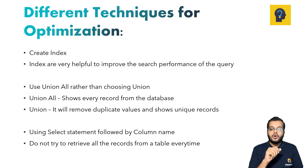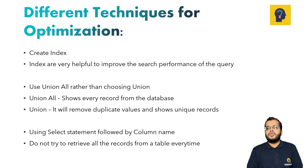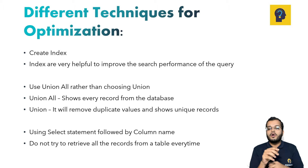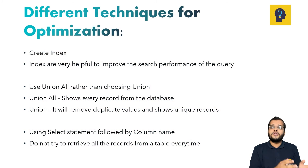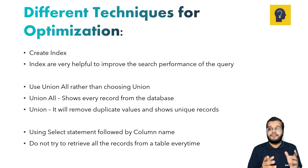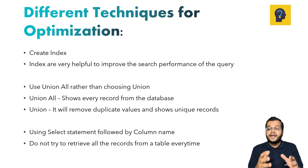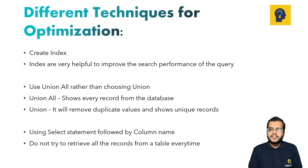The second technique is to use UNION ALL rather than UNION. UNION ALL shows every record from the database, whereas UNION removes duplicate values and returns only unique records. When you have millions of records and use UNION, it first finds duplicates, removes them, and then returns the result — causing a delay. So it is preferable to use UNION ALL.